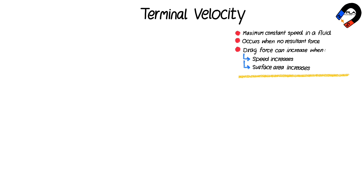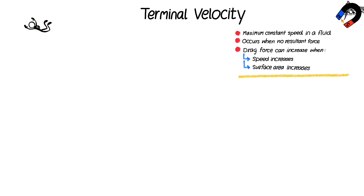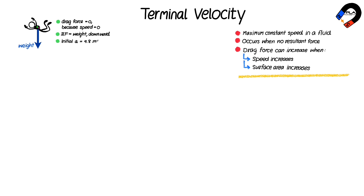Consider the terminal velocity of a skydiver. When a skydiver jumps out of an airplane, they are initially at rest. Drag force is zero because their speed is zero. Only weight acts on them downward, and the resultant force is equal to their weight. So their initial acceleration is 9.8 meters per second squared. This causes their speed to increase from zero, and the drag force also increases.